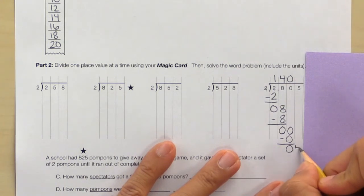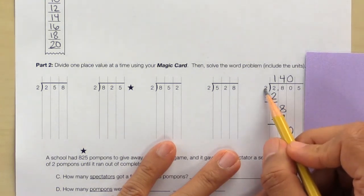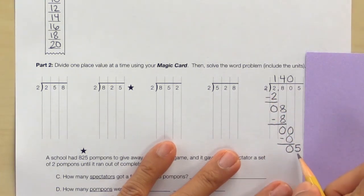Bring down the 5. Can we do 5 divided by 2 evenly? No. So count backwards. 4 divided by 2? Yes. Write it down.